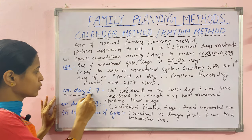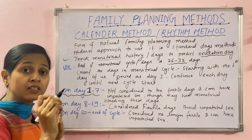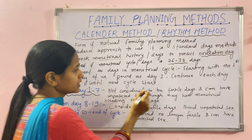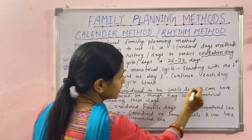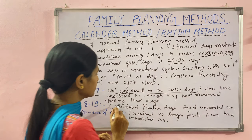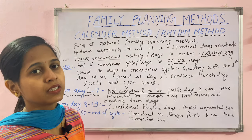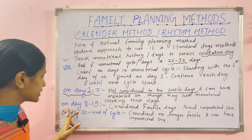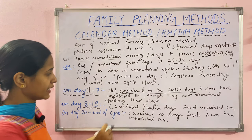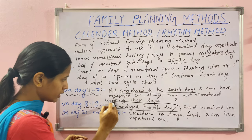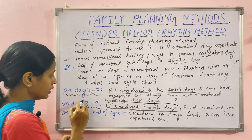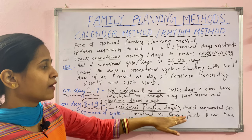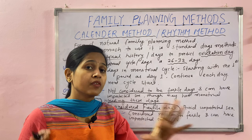Days 1 to 7 are not considered fertile days — you may have menstrual bleeding during these days, so unprotected sex has a low chance of resulting in fertility. Days 8 to 19 are considered fertile days. During this period, there is a high chance of conception, so unprotected sex should be avoided if pregnancy is not desired.